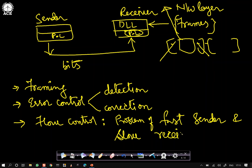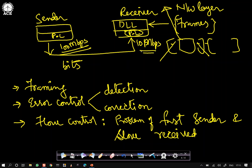What is flow control? Flow control is the problem of a fast sender and a slow receiver. Every machine, depending on its network interface card and cable, has its own speed of acceptance and sending. For example, if the sender is sending data at 100 Mbps but the receiver can only accept at 10 Mbps, the receiver cannot accumulate data at that rate. This synchronization problem between fast sender and slow receiver is what flow control addresses — we have protocols and algorithms for dealing with the remaining bandwidth mismatch.